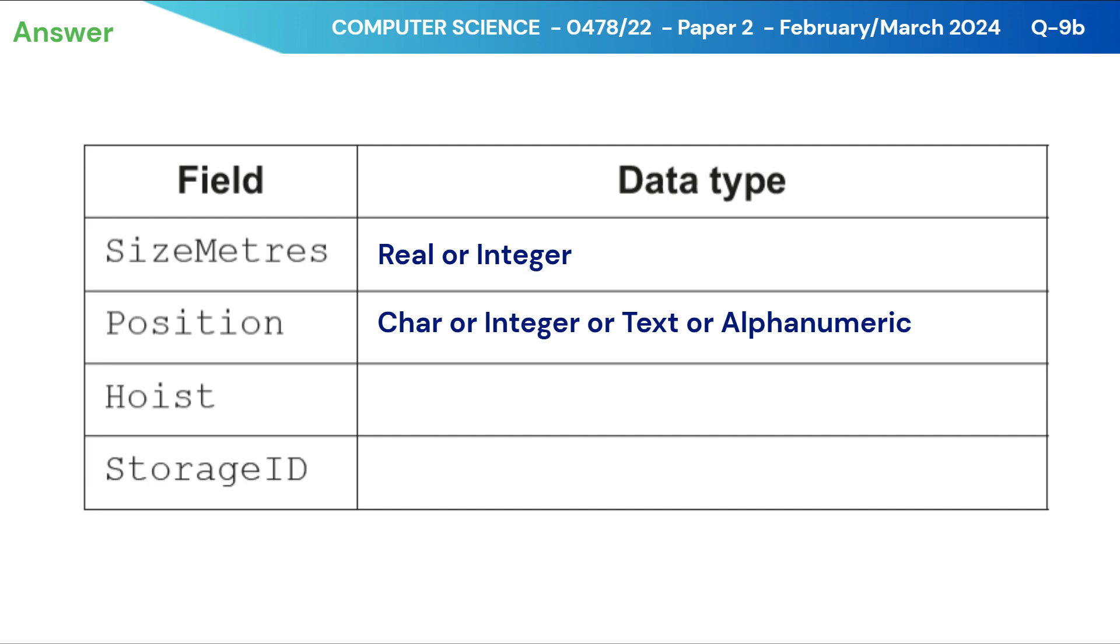Then hoist. It will store an indicator, can be true or false, yes or no, or simply Y or N. So again, it can have either Boolean, char, text, or alphanumeric data type.